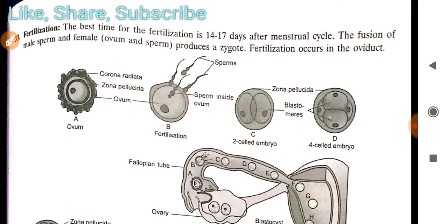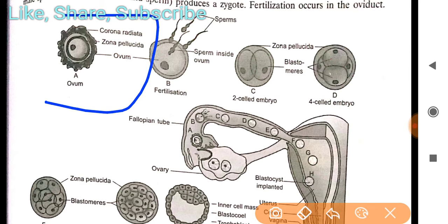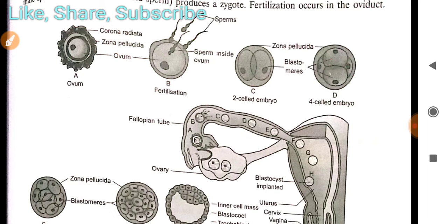You have to understand the structure in detail from your book. The main thing to understand is that first a single ovum is produced. Its outermost layer is known as corona radiata and the inner one is known as zona pellucida. This is the ovum structure.